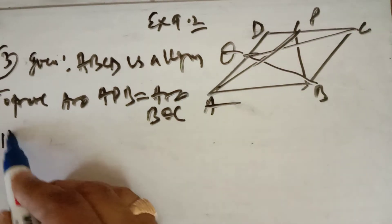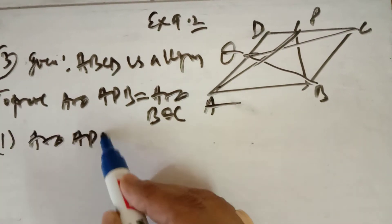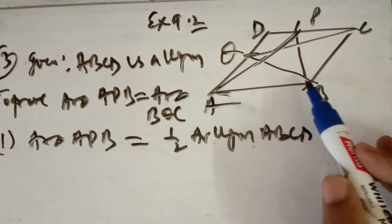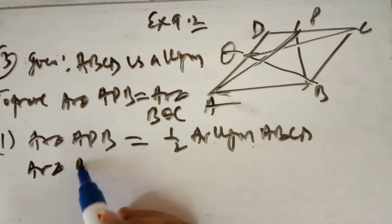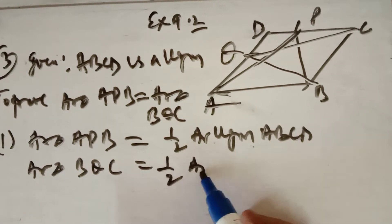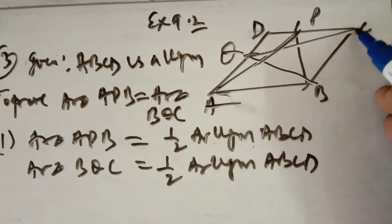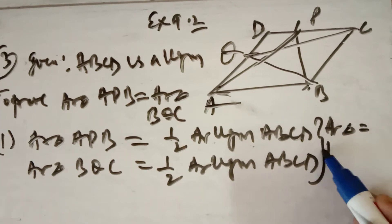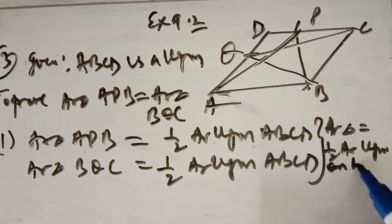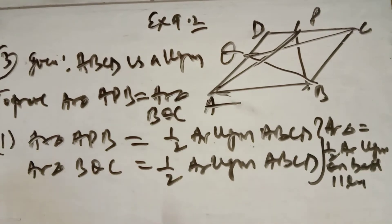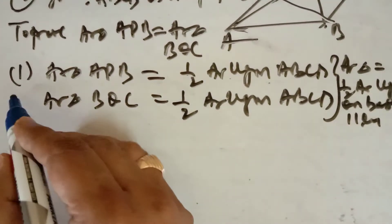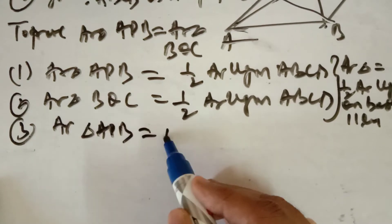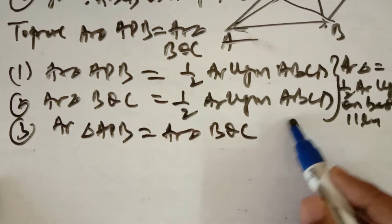The area of triangle APB is equal to half the area of parallelogram ABCD because they are on the same base AB and between the same parallel lines. Similarly, the area of triangle BQC is also equal to half the area of parallelogram ABCD, on the same base BC and between the same parallel lines BC and AD. Since both triangles equal half the area of the same parallelogram, area of triangle APB equals area of triangle BQC, from steps 1 and 2.